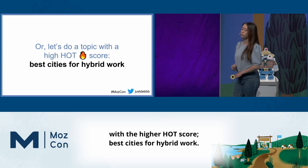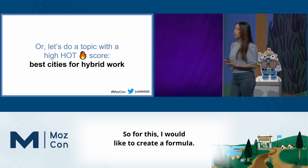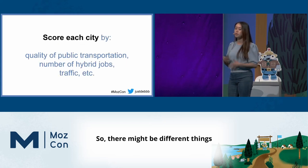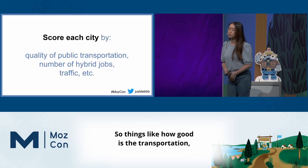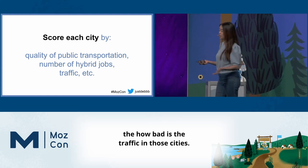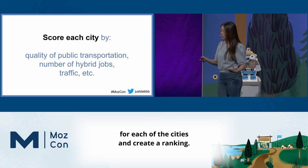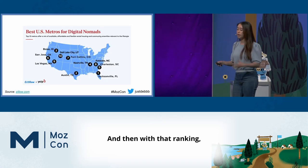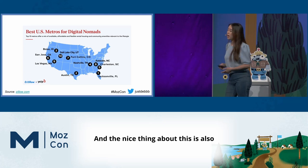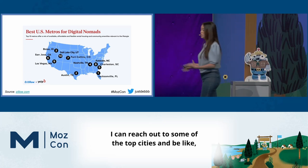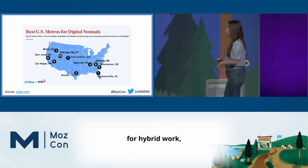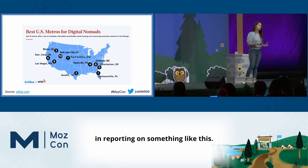Let's also do the other topic with the higher HOT score — best cities for hybrid work. For this, I would like to create a formula: what does a good city for hybrid work look like? There might be different things we can score cities on, like how good is the transportation, the number of hybrid jobs, how bad is the traffic in those cities. We'll be able to get a score for each city and create a ranking. With that ranking, we can also create a really cool graphic — people love to share these and journalists like to report on them. And I can reach out to top cities and say, 'Hey, Seattle ranked number two for the best cities for hybrid work,' and journalists in Seattle would be really interested in reporting on that.